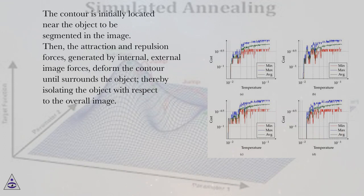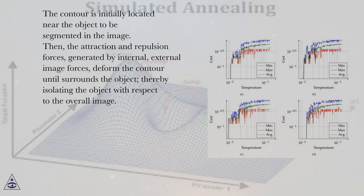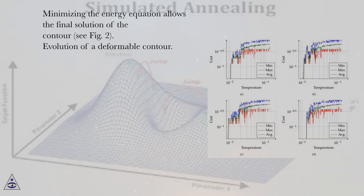The attraction and repulsion forces generated by internal, external, and image forces deform the contour until it surrounds the object, thereby isolating it with respect to the overall image. Minimizing the energy equation allows the final solution of the contour — see figure 2.